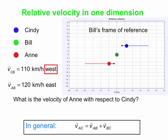We want to know the velocity of Ann with respect to Cindy. Put yourself in Cindy's car — you'd see Bill flying back behind you at high speed, at 110 kilometers per hour east with respect to you. And if you look across at the opposite lane, you see cars really flying past you in the other direction. So we're going to get a pretty big number for the velocity of Ann with respect to Cindy. We'll go to Ann's reference frame first and then to Cindy's reference frame.